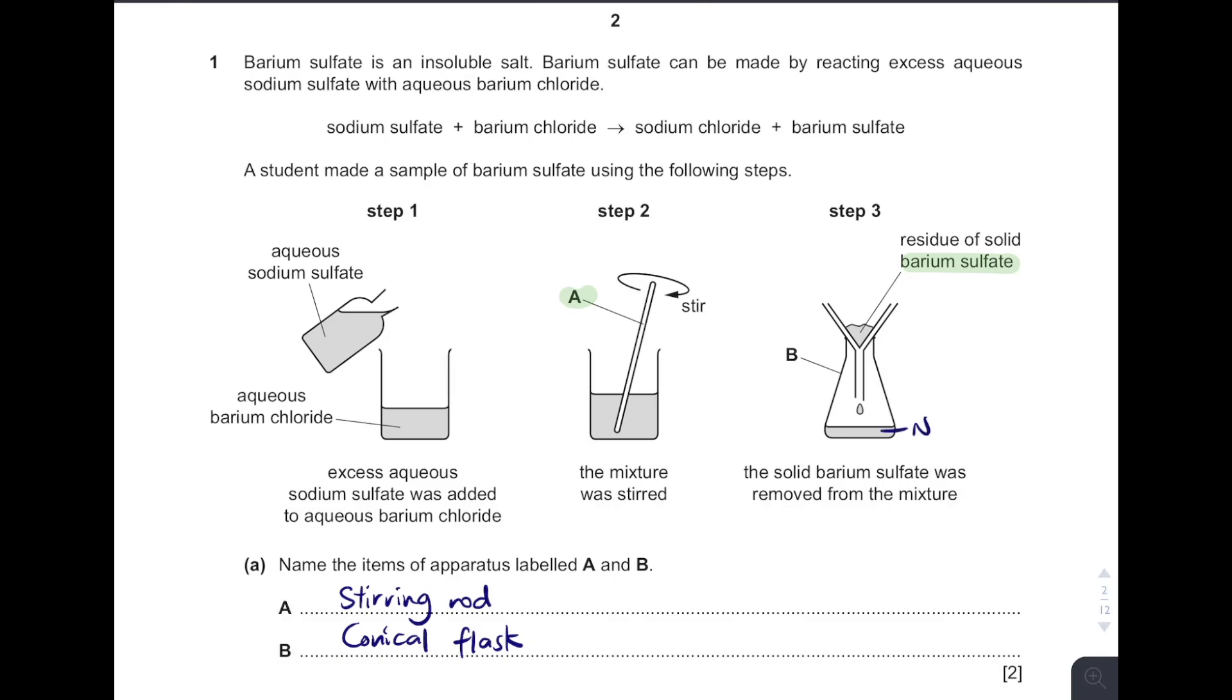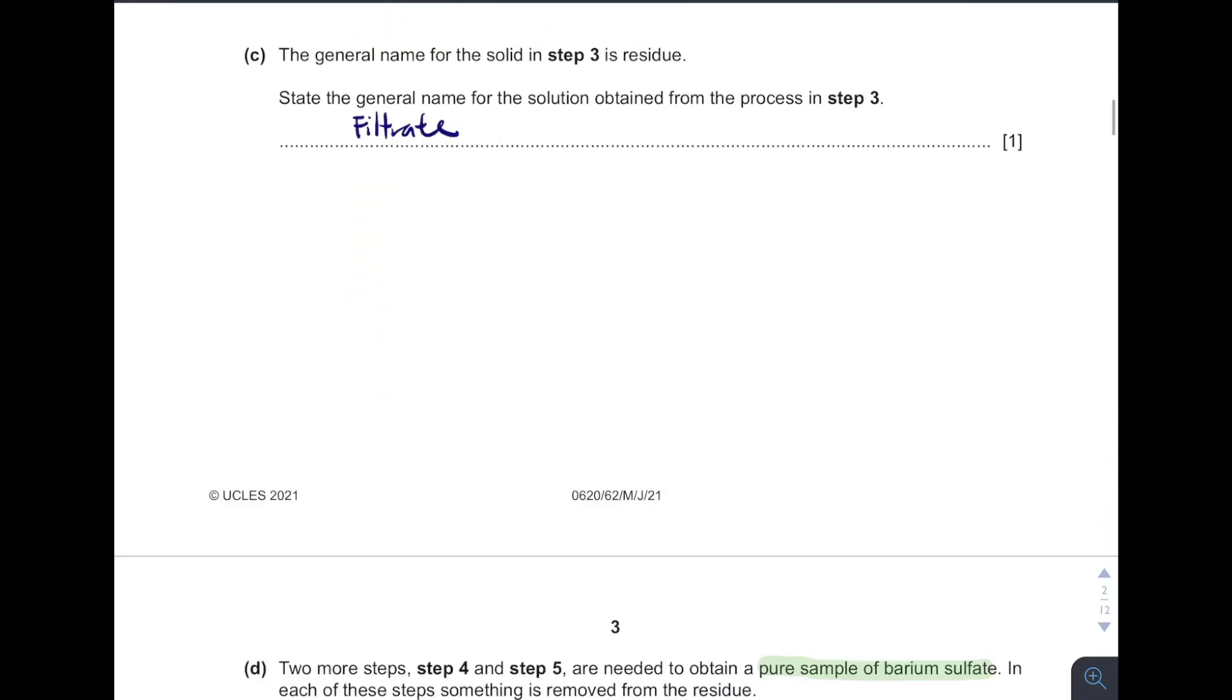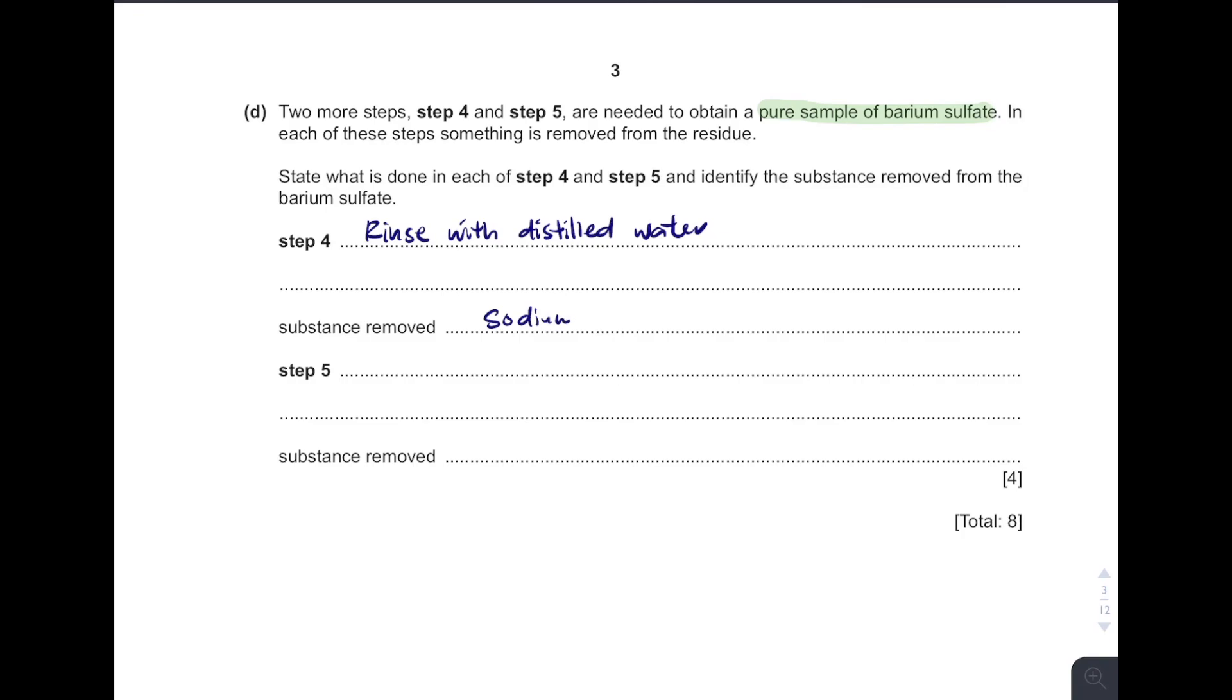Sodium chloride, which is the filtrate. Because some filtrate will stay on the surface of the barium sulfate. So we have to remove sodium chloride. Then step 5 followed by drying with filter paper. It is to remove the water. Previous step we rinse with distilled water, so now for it to dry we remove the water on the surface.